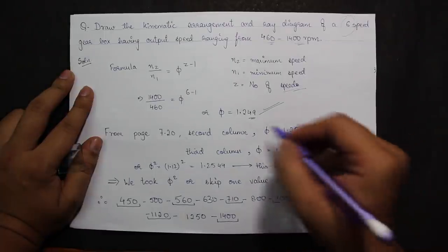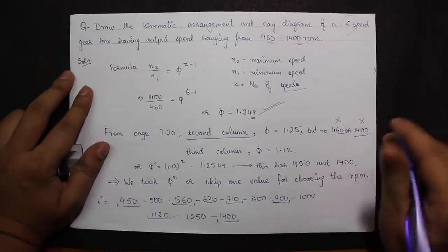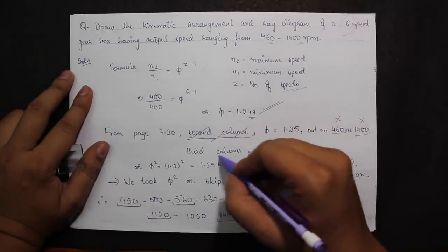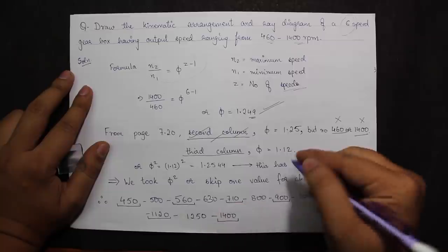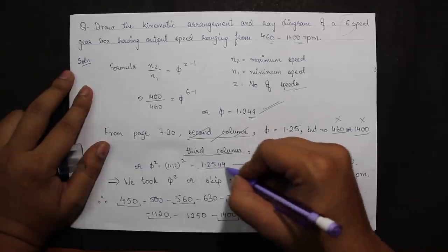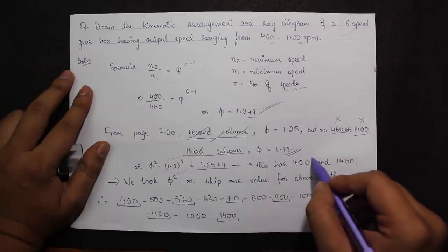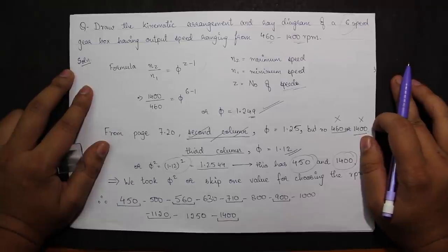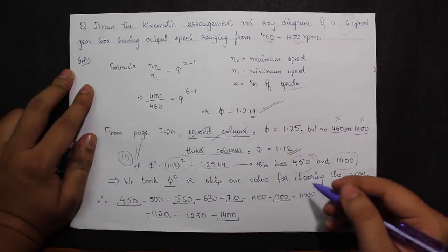Jumping to column 3, for φ = 1.249 I find φ = 1.12 only. After squaring 1.12 I get 1.2544, which is very close to 1.249, so I can select column 3. In column 3, speed 450 and 1400 are both present, confirming the selection. Since I squared 1.12, I cannot take consecutive values — I must skip one and take the next.